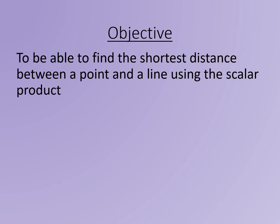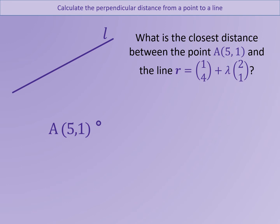In this lesson we will look at finding the shortest distance between a point and a line using the scalar product. We are going to start by considering the line r equals (1,4) plus lambda (2,1) and the point A with coordinates (5,1). We are going to try to find the shortest distance from A to line L.